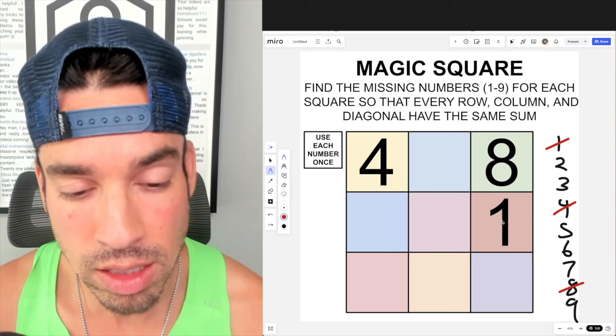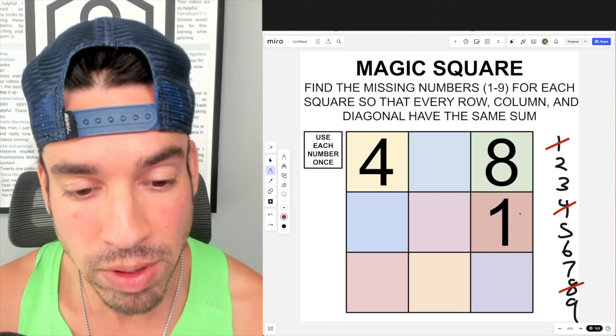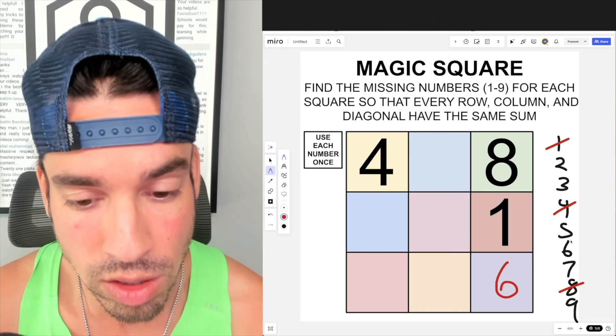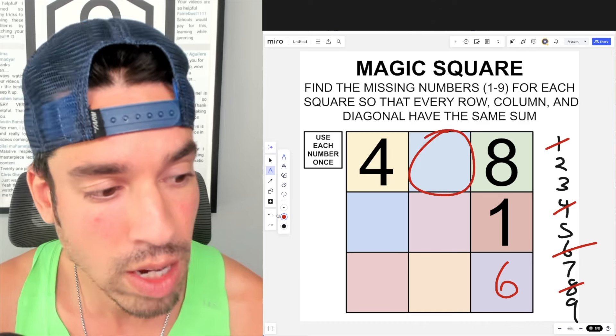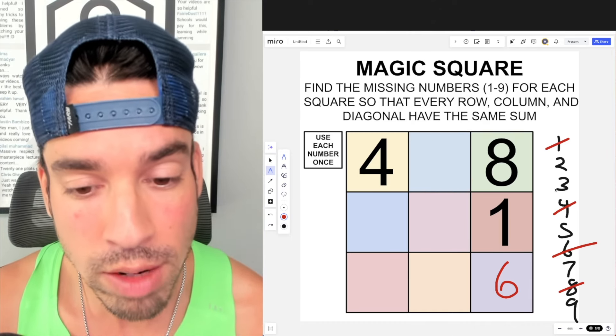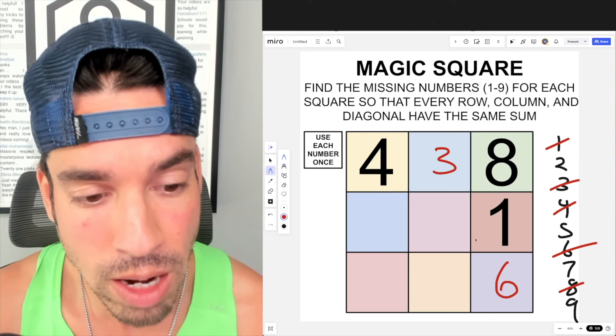Now looking at this one, this is pretty cool because we have two numbers in this column and we know with the third number they all three have to add up to 15. Well, eight plus one is nine. Nine plus what is 15? That is six. Very nice. Now what about right here? We've got a four and an eight, that's adding up to 12. That means we're three away from 15, so three goes right here.